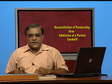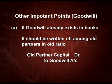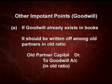There are some other points regarding goodwill. First: if goodwill already exists in the books, it is a matter of financial prudence according to Accounting Standard 6, issued by the Institute of Chartered Accountants of India, that it should be written off as immediately as possible because it is a non-productive asset. The old partners must write it off in their old ratio. The entry is: old partners' capital account debit to goodwill account, in the old ratio.